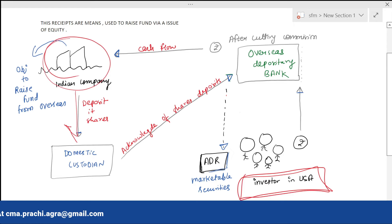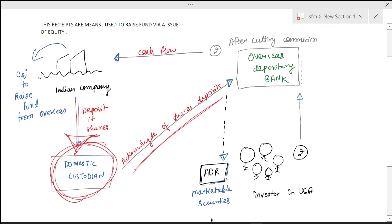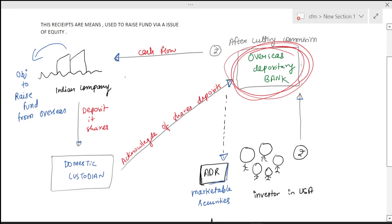Then the custodian will acknowledge the shares to an overseas depository bank. This bank plays a role between the company and investor to support them, so there are no trust issues. The bank will take the security.